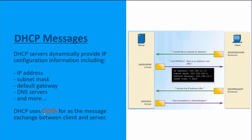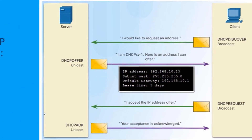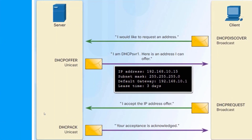DHCP is a powerful tool for easy dynamic addressing across our networks, but it can also be a powerful tool for malicious threat actors. Quick recap of DHCP: we have DHCP servers that are going to dynamically provide addressing for us. The addressing includes IP addresses, subnet masks, default gateway, DNS servers, and even more with DHCP options to our clients. The typical conversation with DHCP goes back to DORA — Discover, Offer, Request, Acknowledge.